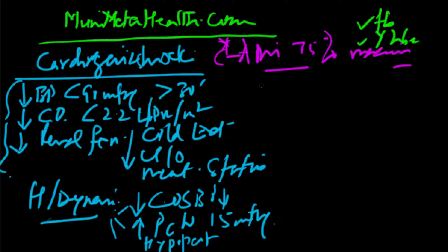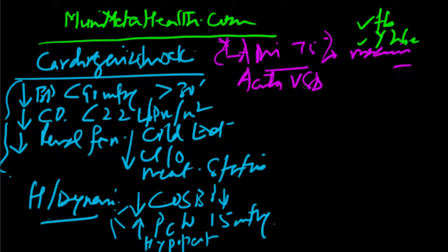The other important causes are, as a result, could be also because of an acute MI, or it could be because of other reasons, like an acute VSD, for instance. VSD is developed because of a massive septal infarct, and that could be an acute VSD resulting into a cardiogenic shock.